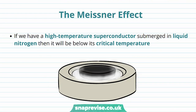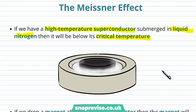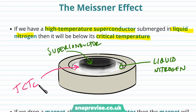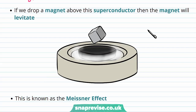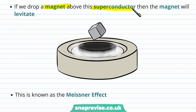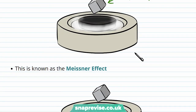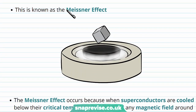Finally, we discuss the Meissner effect — an observable consequence of superconductivity. If a high-temperature superconductor is submerged in liquid nitrogen, it will be below its critical temperature and acting as a superconductor. When a magnet is placed above it, the magnet is observed to levitate. This phenomenon is known as the Meissner effect.